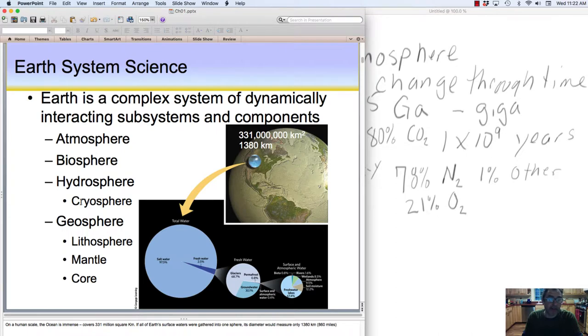The hydrosphere is oceans, and a subset of the hydrosphere is a cryosphere, which are the glaciers. One thing to note is the oceans are immense. They cover about 331 million square kilometers, a huge area, about 71% of Earth's surface.